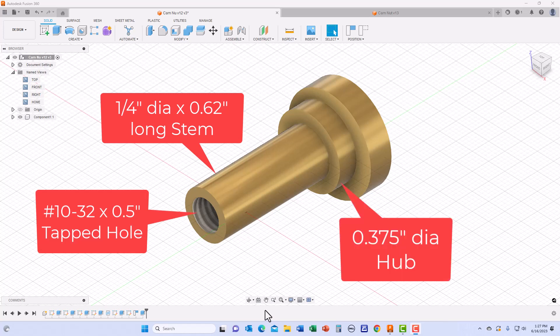At the bottom of the stem is a 0.375 inch diameter hub. This left side of the cam nut will be machined on a Tormac 8L lathe.